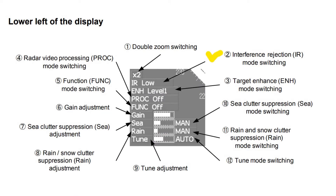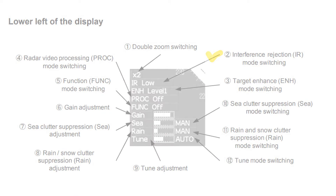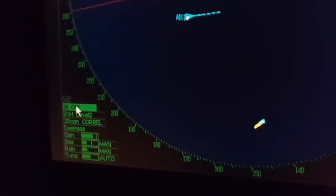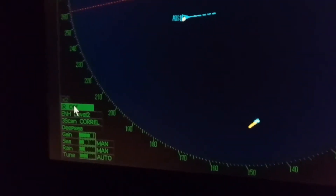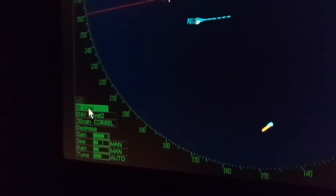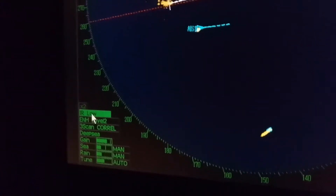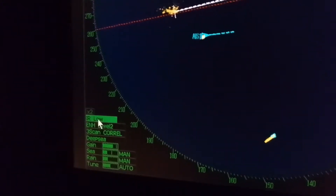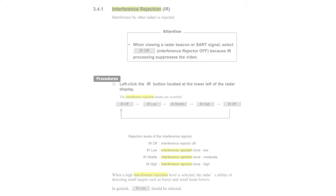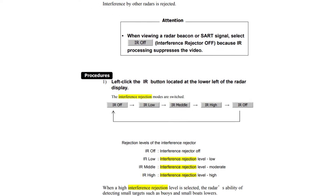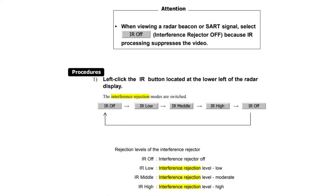Interference rejection (IR) mode switching: in this mode, interference from other radars is rejected. When viewing a radar beacon or search and rescue transponder signal, select IR OFF (interference rejection off). When a high interference rejection level is selected, the radar's ability to detect small targets such as buoys and small boats lowers. In general, IR LOW should be selected.